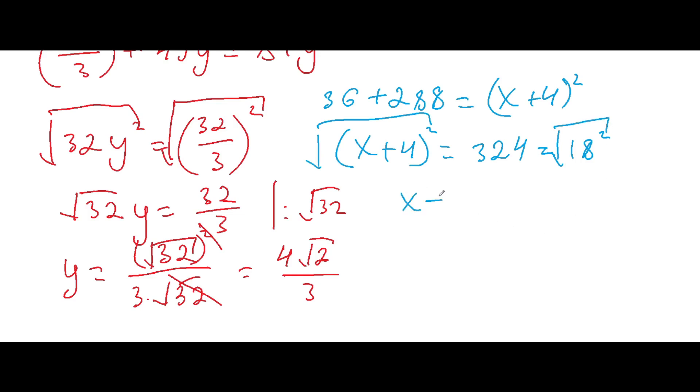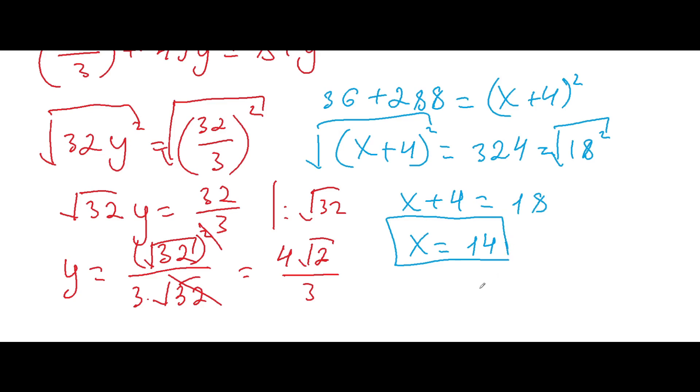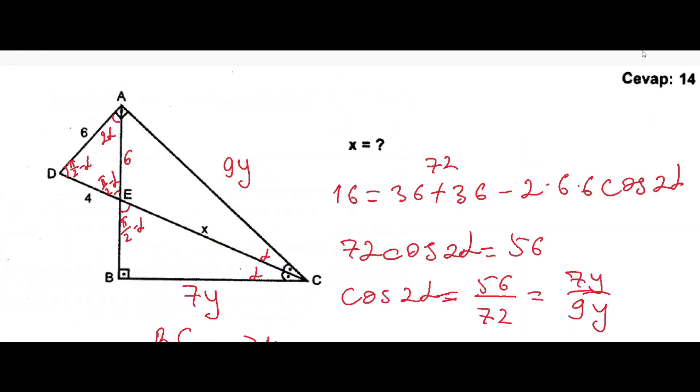And x plus 4 squared will be equal to if we add here. We can get 324 which is the square of 18. And we can take a square root again here. And we'll get x plus 4. Here we could write plus minus. But if we'll write down minus, we'll get a negative number. So it will be plus 18. And x will be equal to 14. If we'll subtract on both sides, 4.